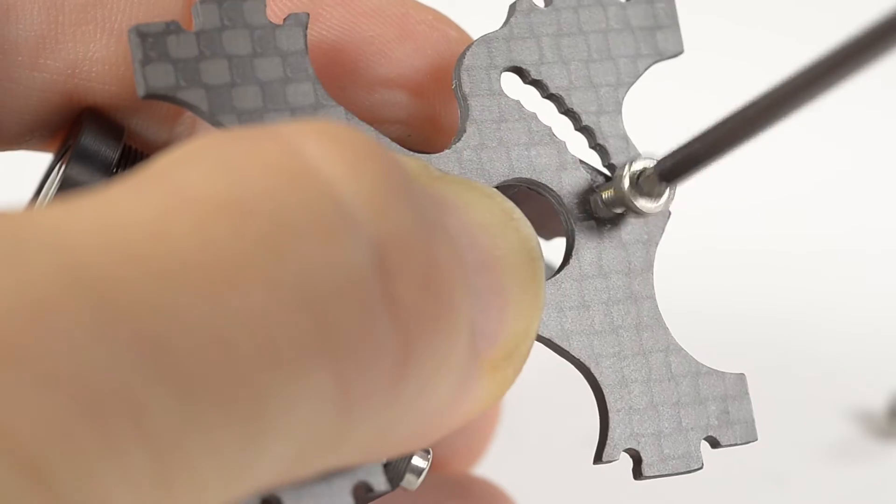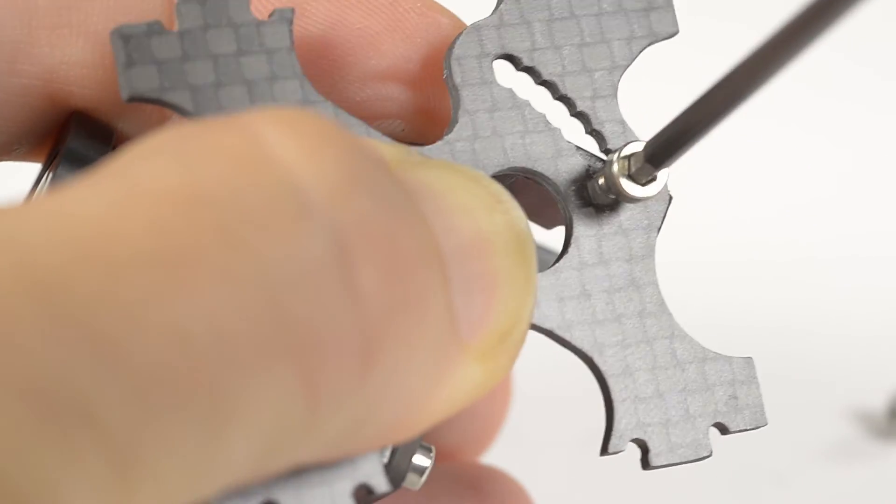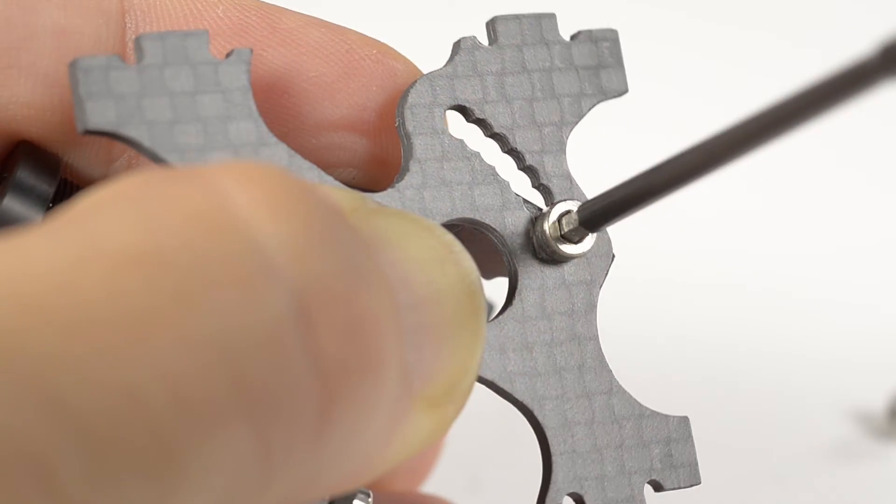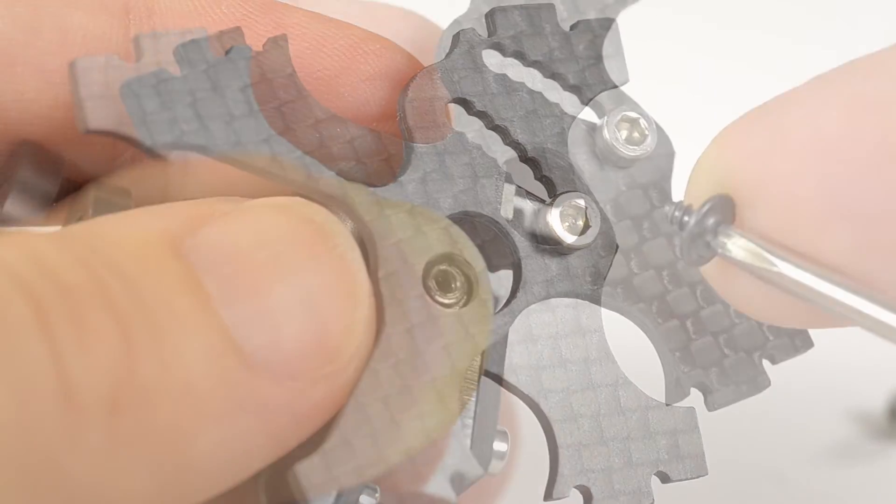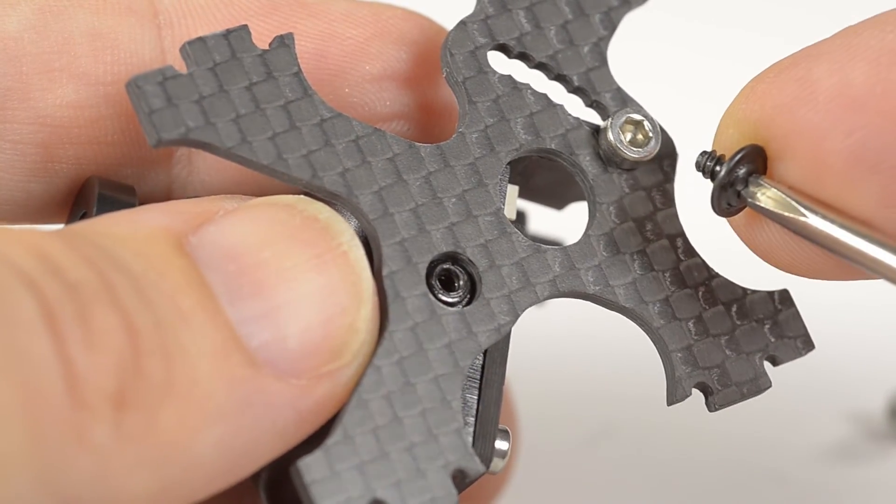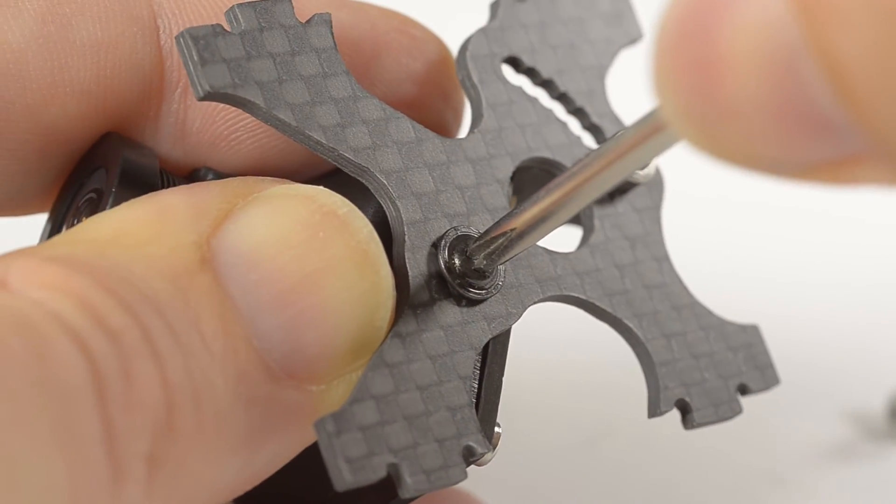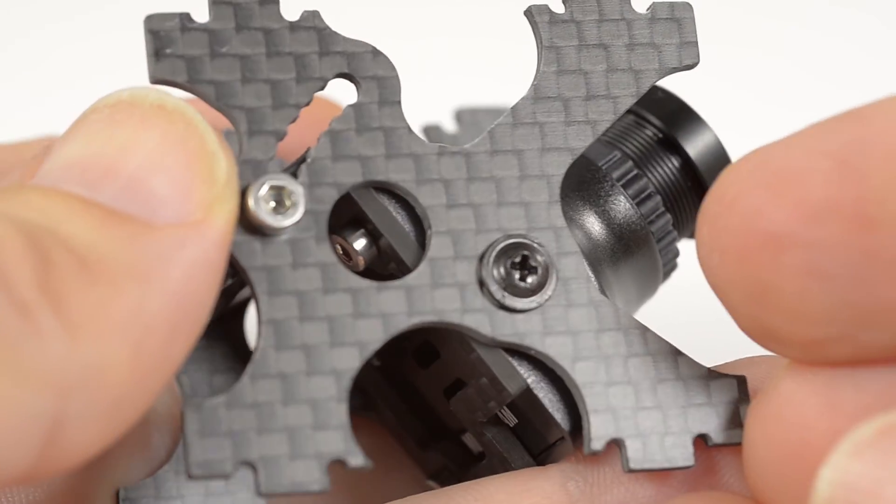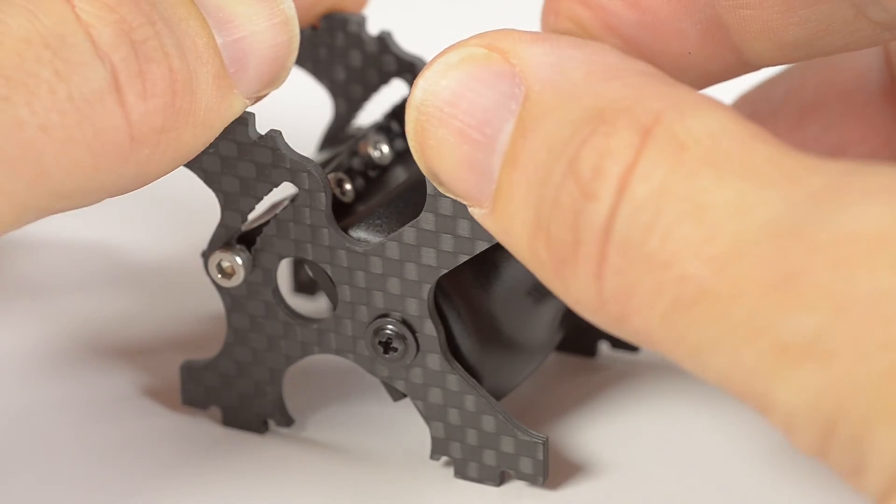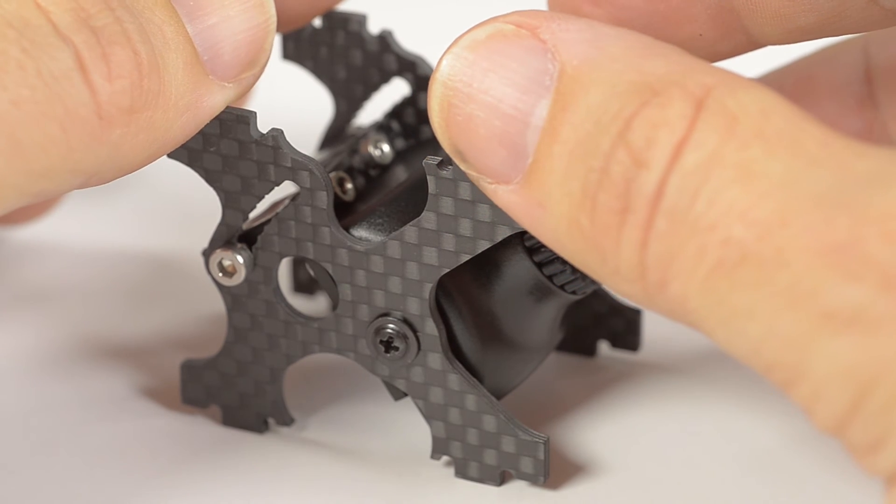Insert the M2.5 by 5 screw and tighten until only just touching the side plate. Insert the side screw that came with the camera and again only tighten enough to just touch the side plate. Repeat the other side and then align by pressing flat on a bench.